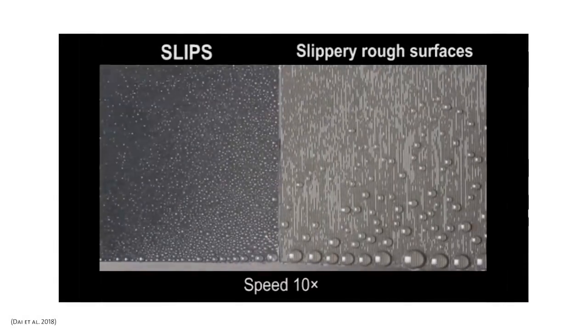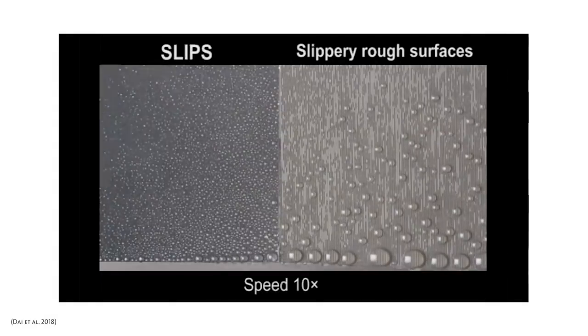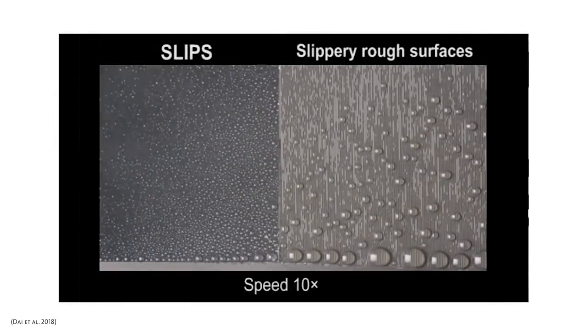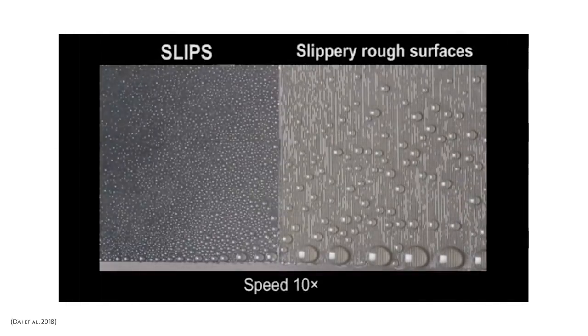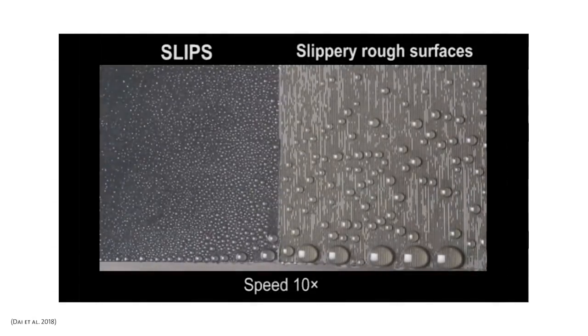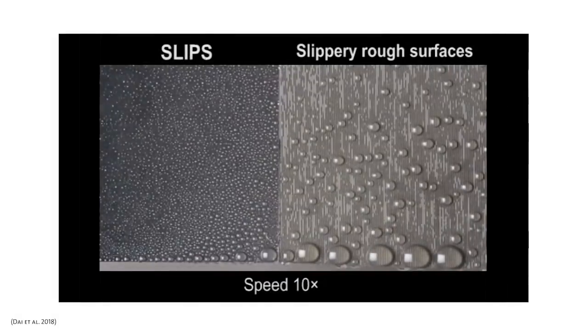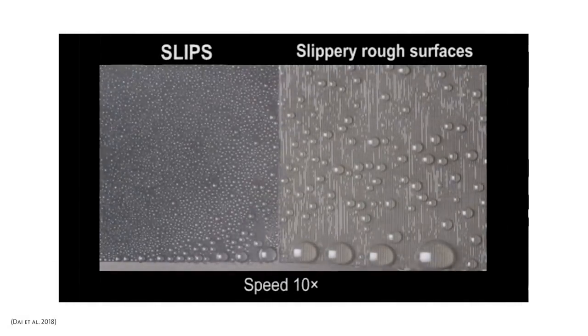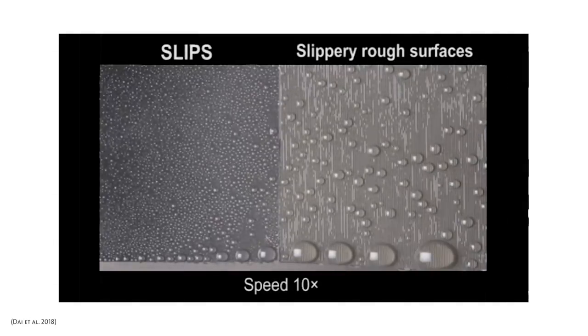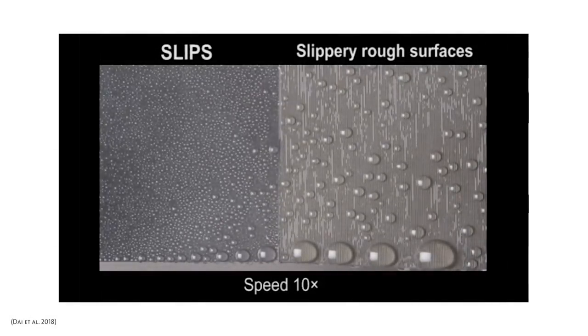Just recently, my research group has developed this new material called slippery rough surface that can effectively collect water from air and transport them away. As the name implies, slippery rough surface, it is not only slippery but also has a very high surface area such that it can collect water very effectively. In this video, you are seeing that I am putting slippery rough surface and slips side by side. You can see that slippery rough surface actually can collect way much more water than the controlled slip surface. In the laboratory, we have quantified that slippery rough surface can collect around 10 times more water than a typical fog harvesting material and we are still working on this.